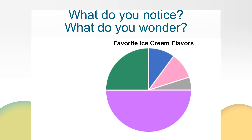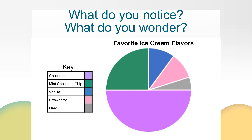Here is a key of the ice cream flavors that represent each category on the circle graph. Are you surprised? Do you think if your class voted on ice cream flavors the graph would look similar, or do you think it would look different? You may be wondering who the survey was given to. 200 students from Clear Lake Elementary School were given this survey, and the circle graph displays the results.